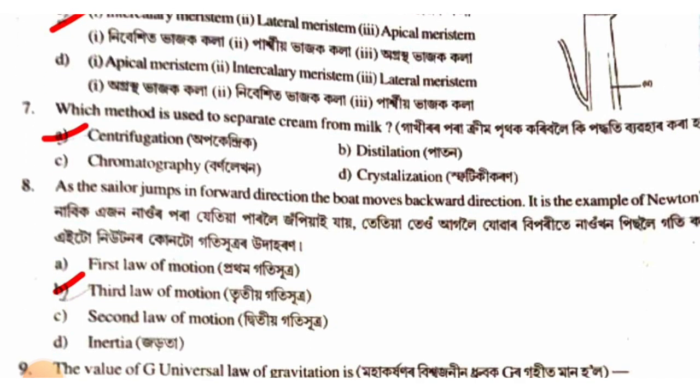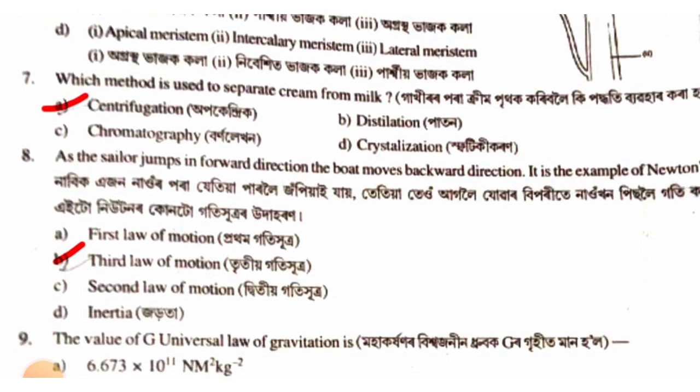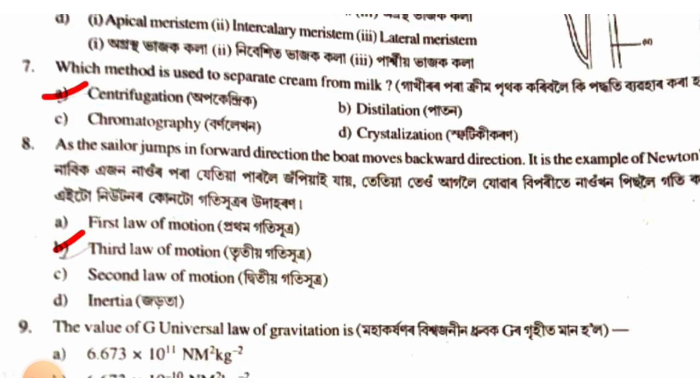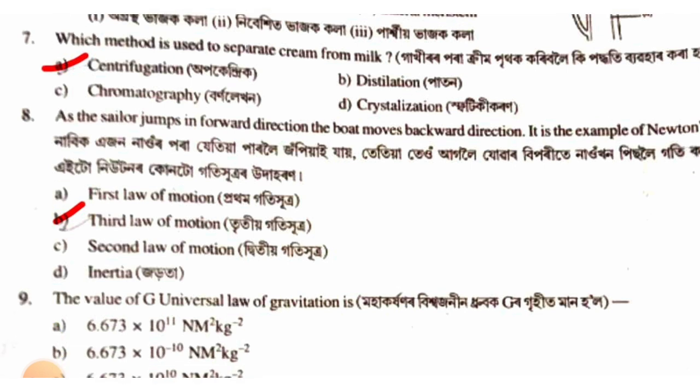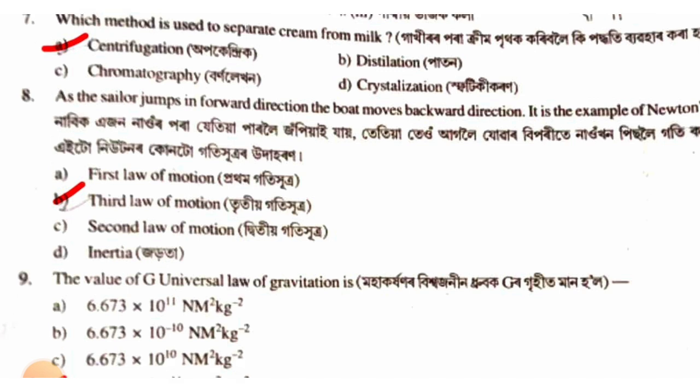Which method is used to separate cream from milk? The answer is centrifugation. A rocket moves in the backward direction — it is an example of Newton's third law of motion.